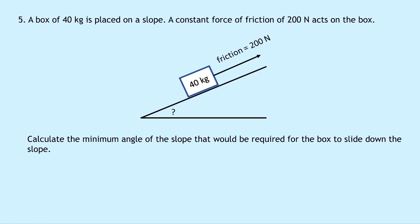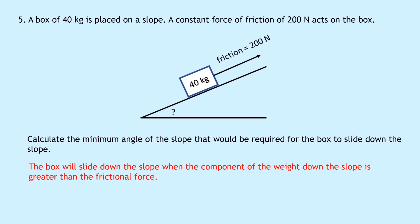Question five says a 40 kilogram box is placed on a slope, with a constant friction force of 200 newtons acting on it. Calculate the minimum angle required for the box to slide down. The box will slide down when the component of weight down the slope is greater than the frictional force — i.e., when mg sine theta > 200.